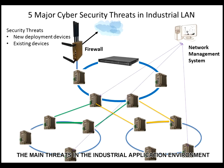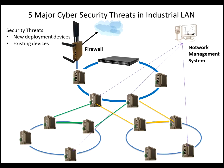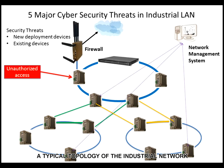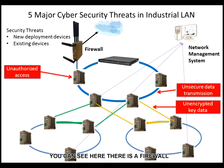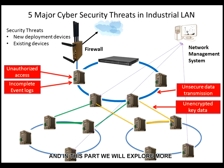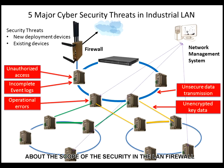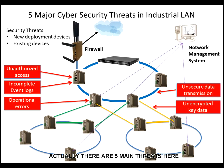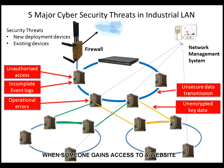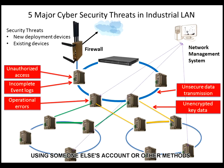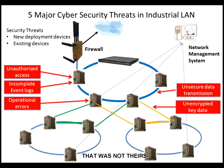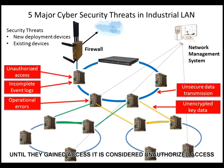This section covers the main threats in the industrial application environment. The topology shown is a typical industrial network topology with a firewall. There are five main threats. The first is unauthorized access — where someone gains access to a device, website, program, server, or service without authorization using someone else's account or other methods. For example, if someone repeatedly guesses a password or username for an account that is not theirs until they gain access, that is considered unauthorized access.